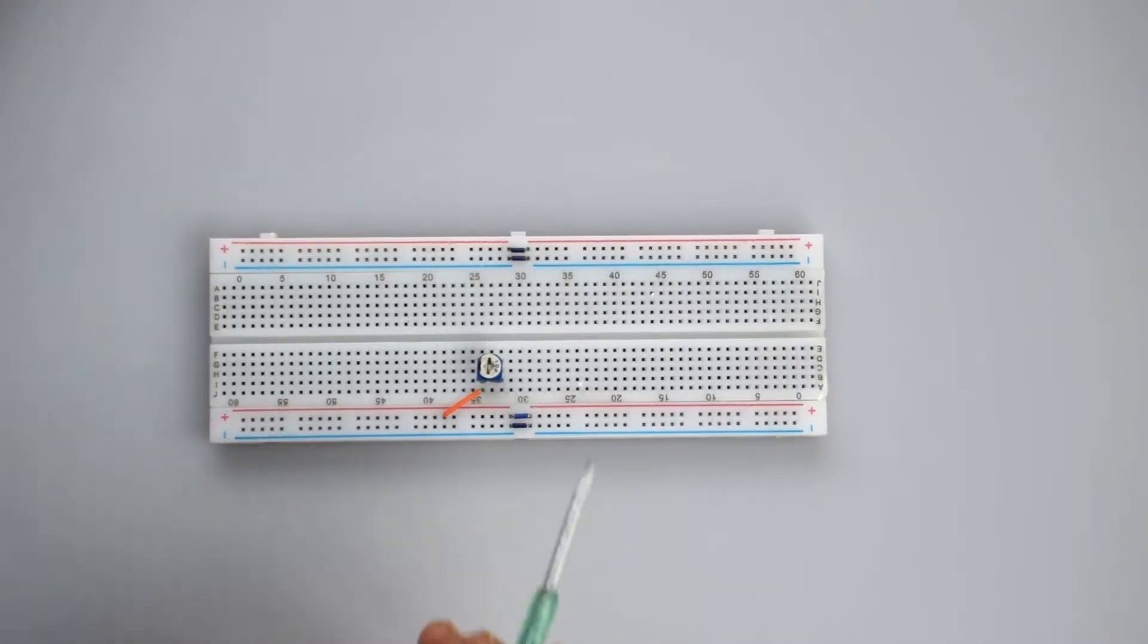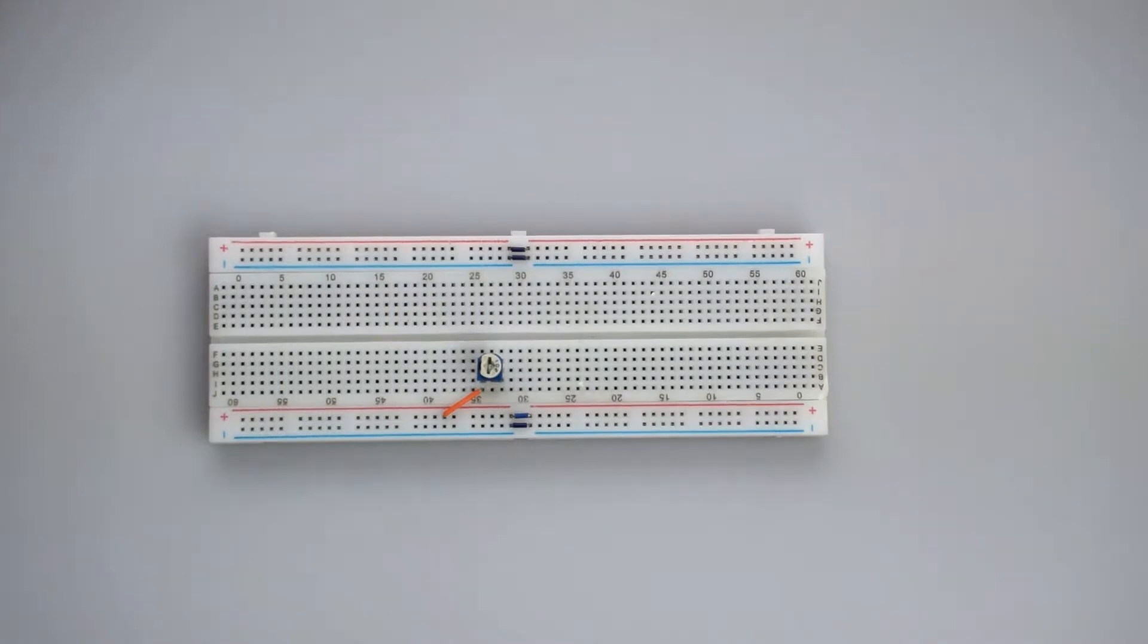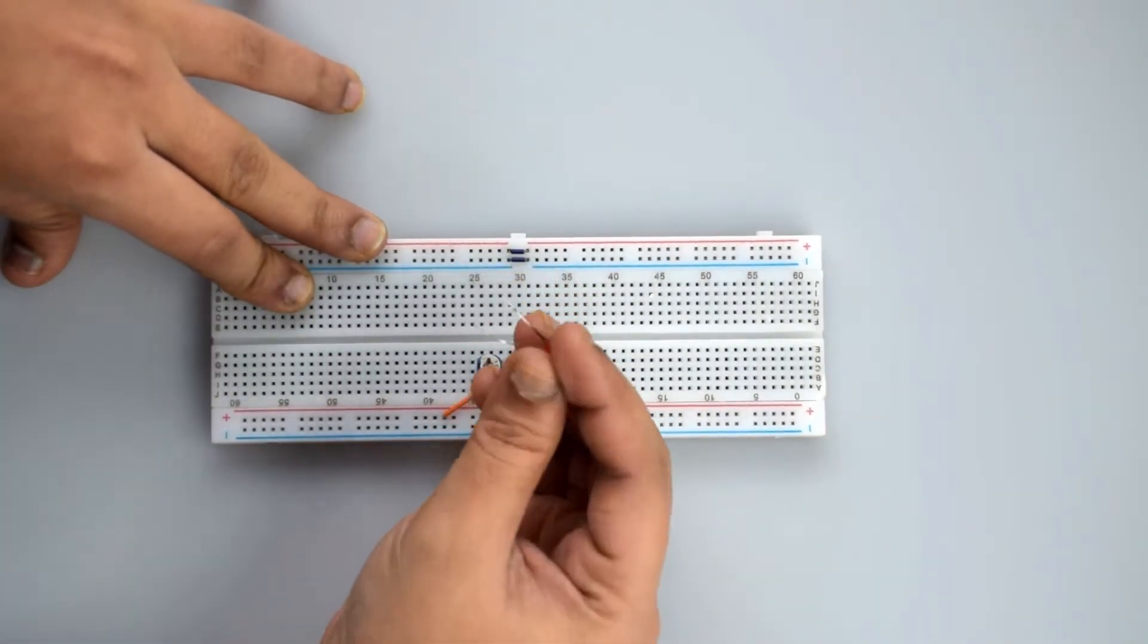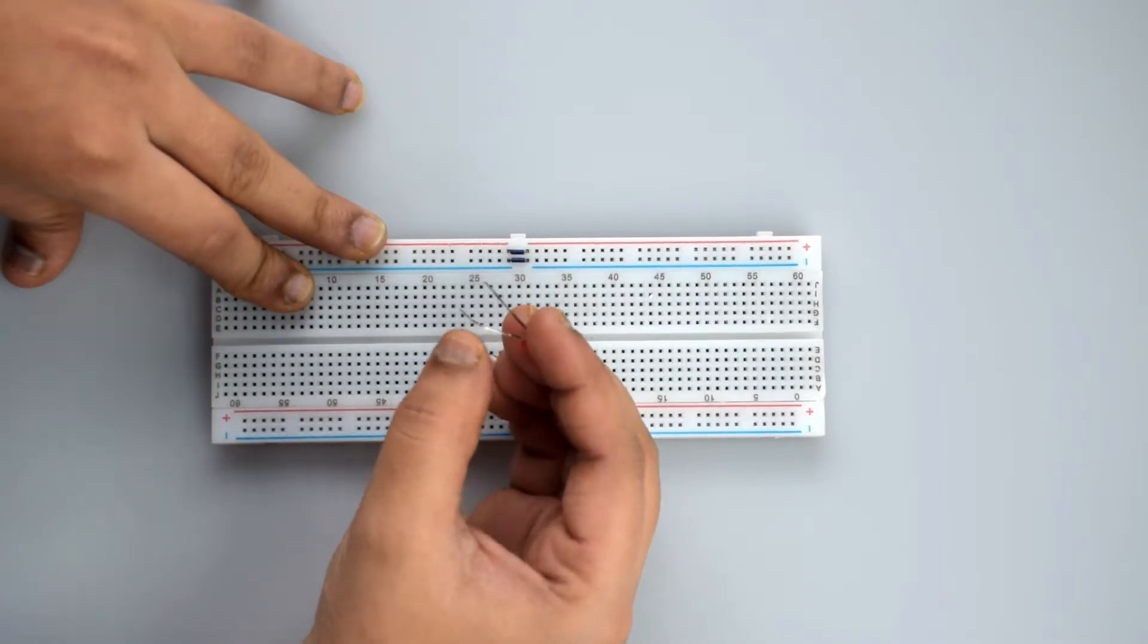Now connect the LED and connect the positive terminal of LED through the 470 ohm resistor.